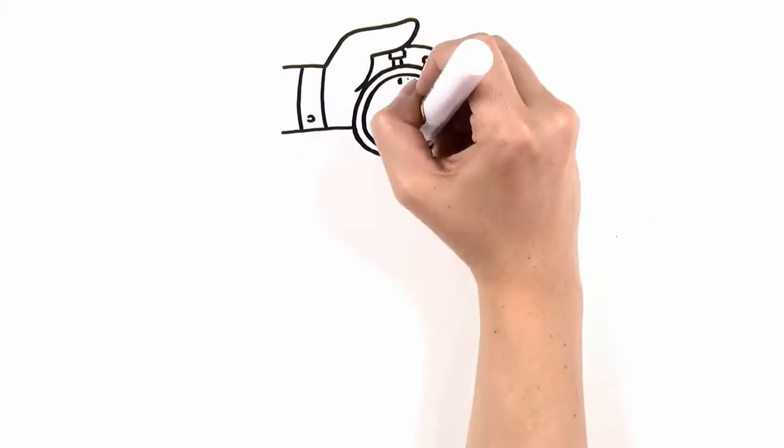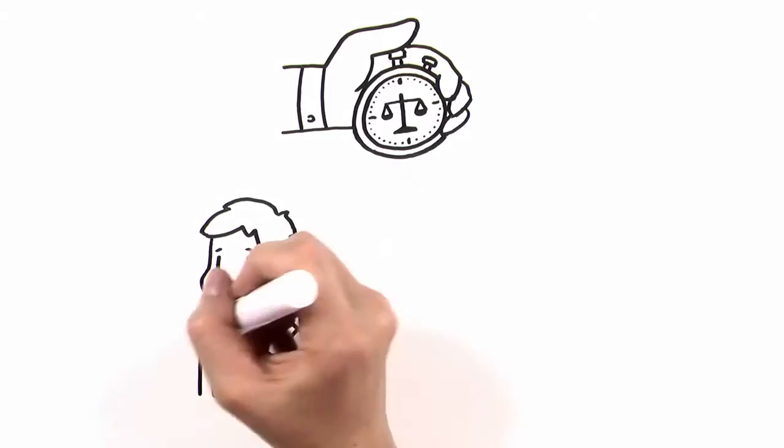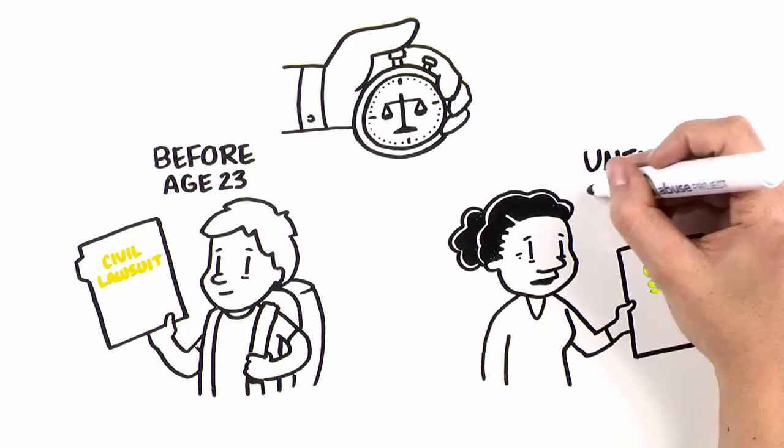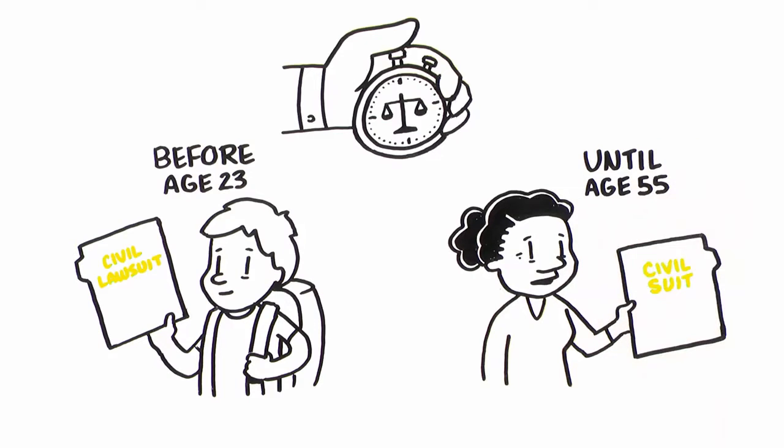Previously, survivors had to file a civil lawsuit against their abuser and the institutions that covered for them before they turned 23. Now, survivors have until age 55 to file a civil lawsuit.